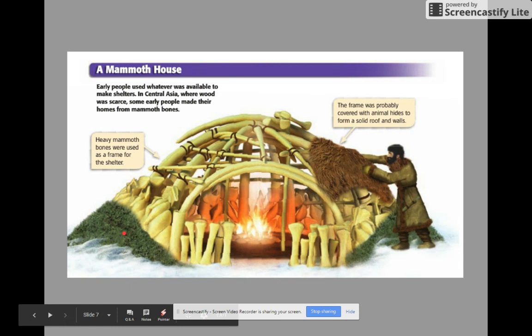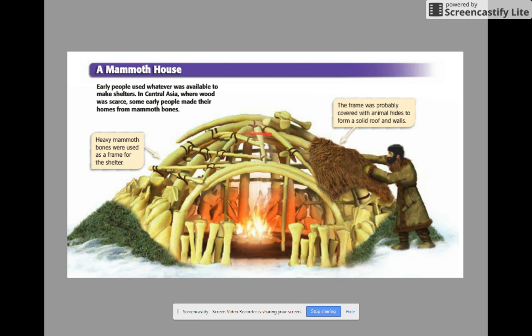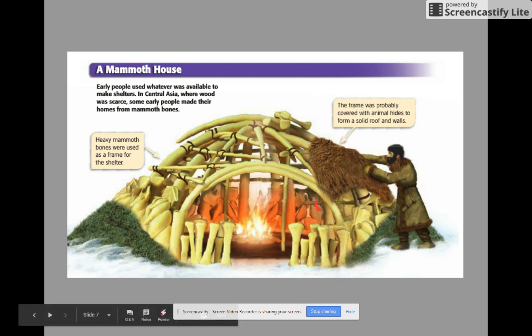This is a mammoth house — a possible type of shelter that early people would have built. Early people used whatever was available to make shelters. This is in Central Asia where wood was scarce, so some early people made their homes from mammoth bones. You can see the mammoth bones used to create a frame for the shelter, and over the top of the frame they would put animal hides to form a solid roof and walls. This almost looks like a modern-day tent — you have a frame and then some type of fabric over the top that shields you from the elements like rain and cold.